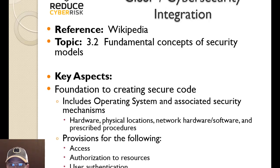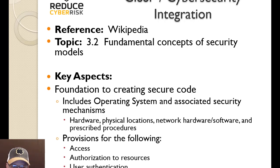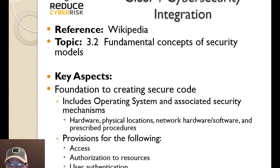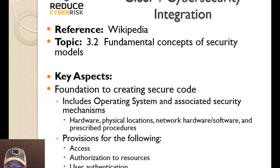In the CISSP cybersecurity integration section, we're going to be talking about 3.2 — Fundamental Concepts of Security Models. I take the ISC Squared training manual and break it down into the different chapters and subdomains. Section 3.2 focuses on the fundamental concepts of security models — the key aspects and data you need to understand for the CISSP exam.